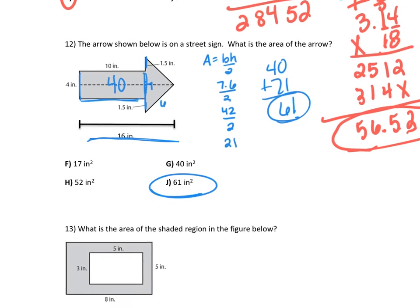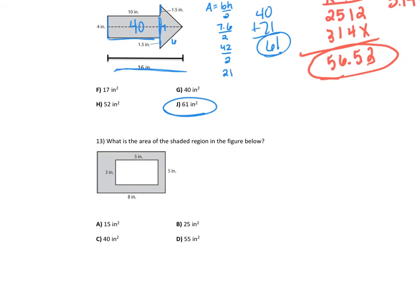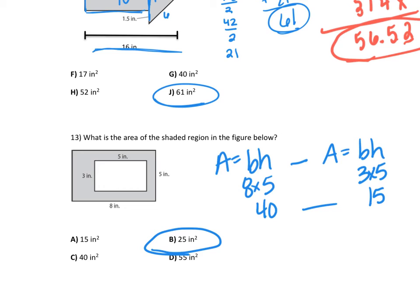Number 13. What is the area of the shaded region of the figure below? You have two shaded regions. You have two rectangles. Base times height. Base times height. Remember, to get something out of something else, we would subtract the two. So we would say base times height minus base times height. So the big base times height is 8 times 5, which is 40. The little base time height is 3 times 5, which is 15. So 40 minus 15 is 25.